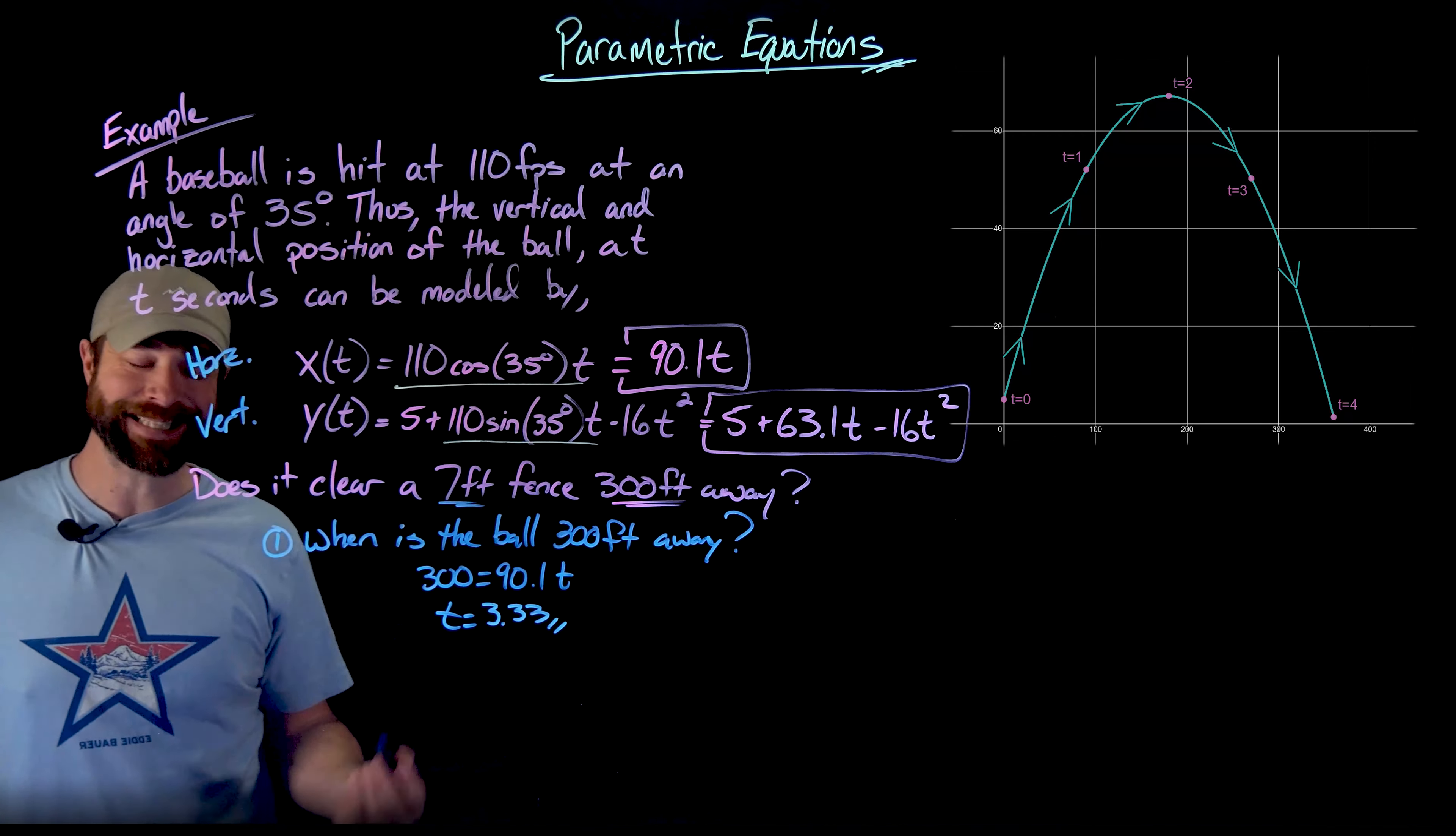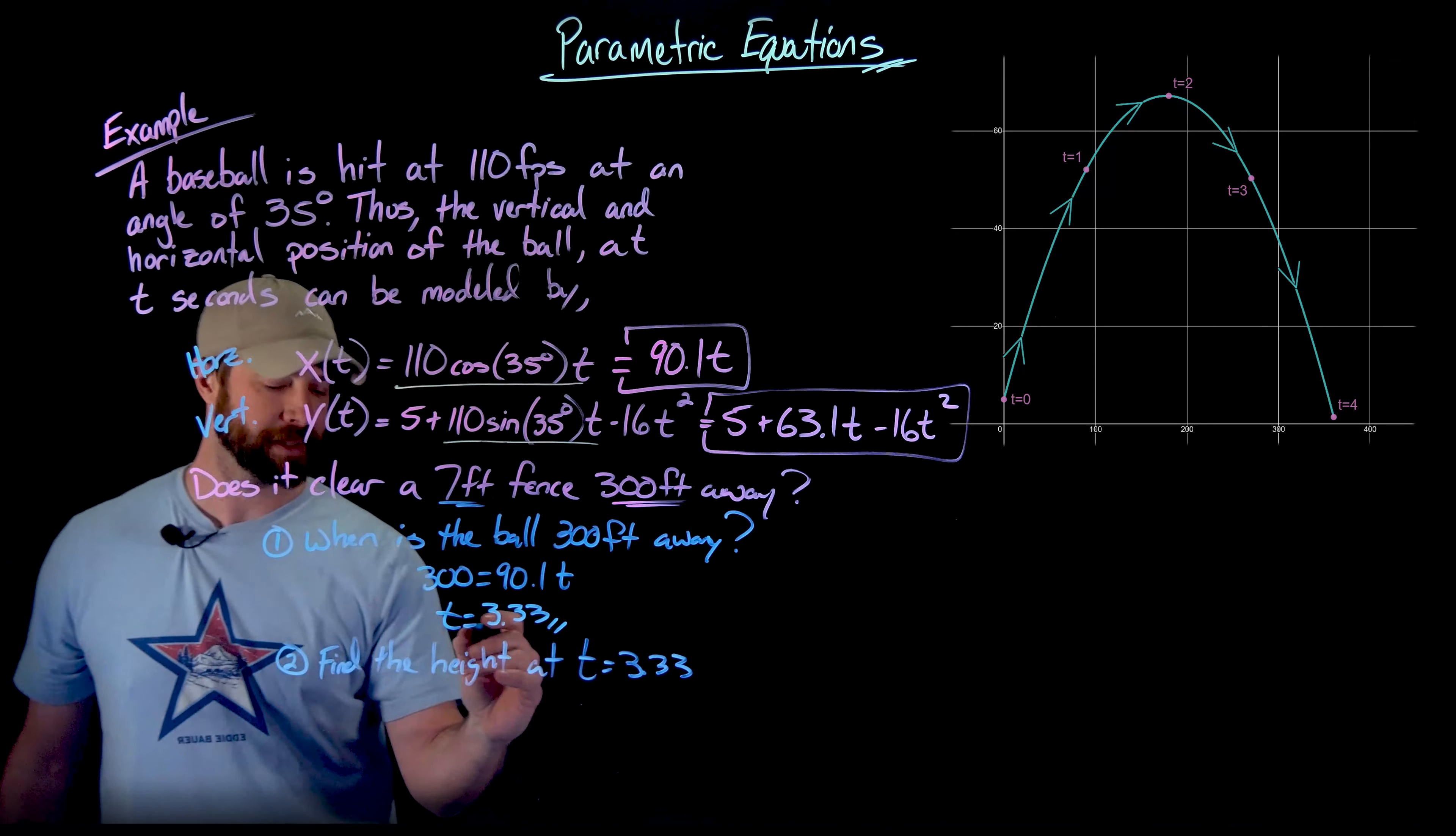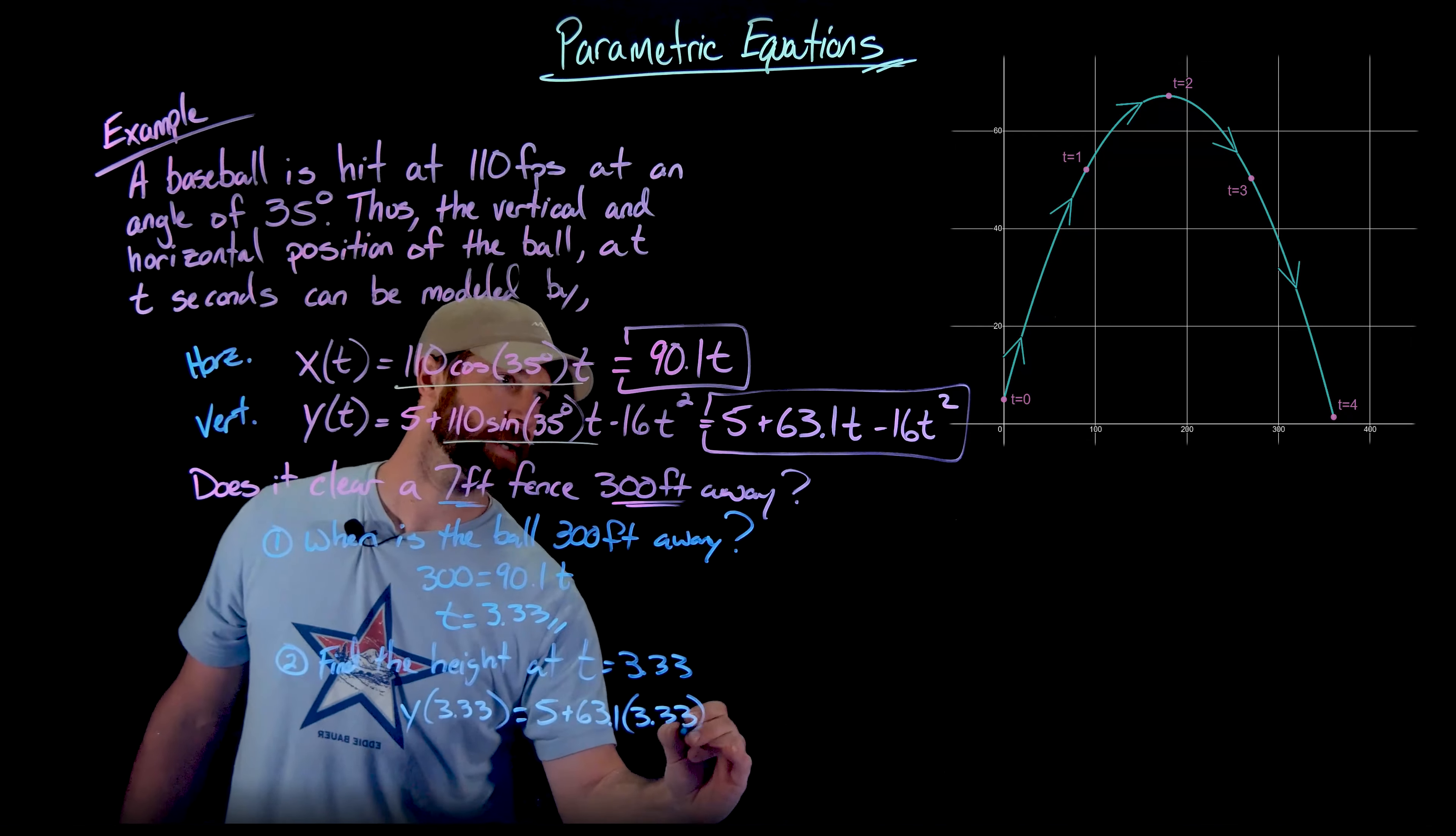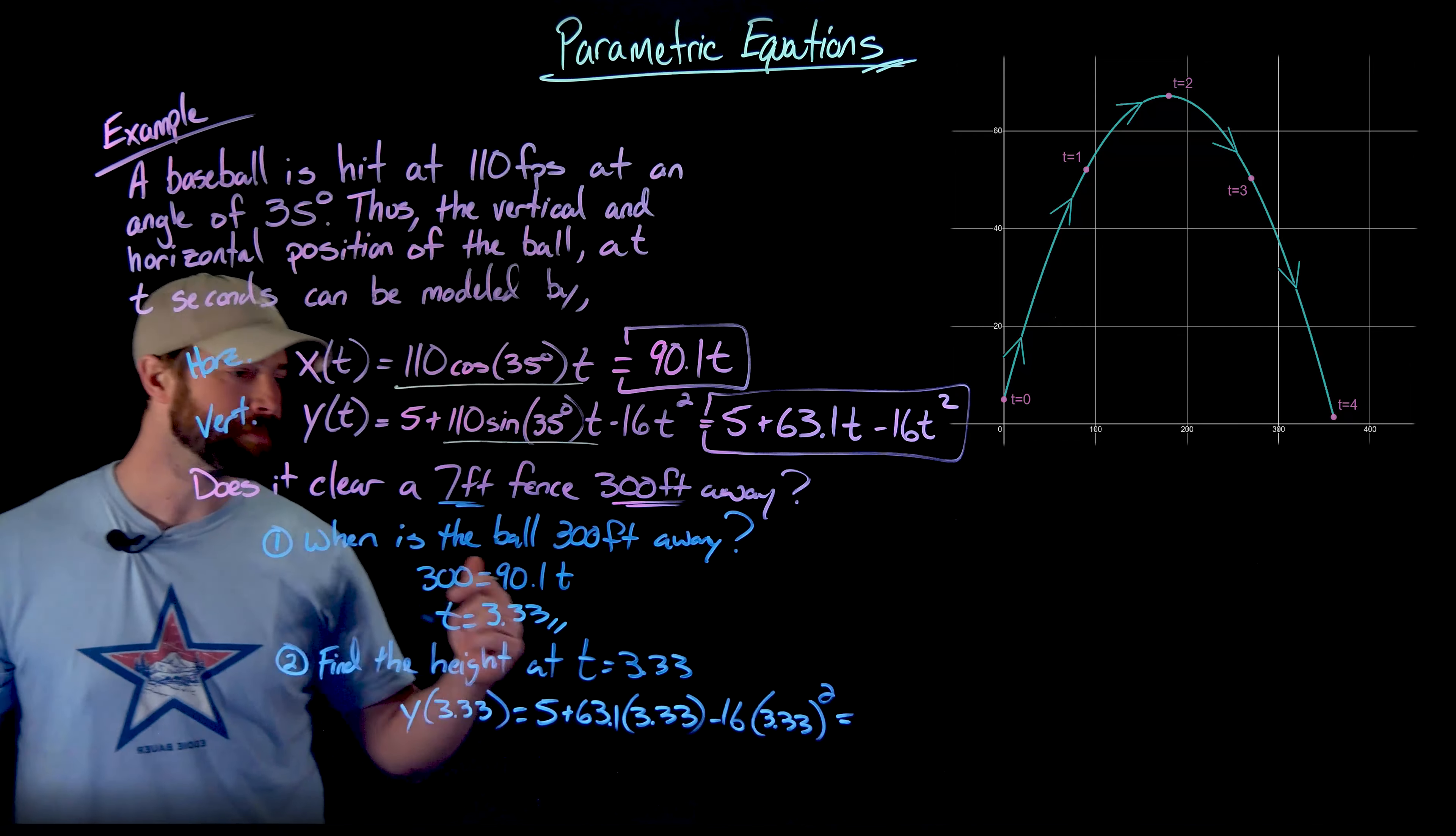So I know the time at which the ball is 300 feet away. And now I need to say, hey, is it at least seven feet? So what I'm going to do right now, I'm going to find the height at t equals 3.33 seconds. And I do that simply by plugging it into this function right here. So y of 3.33 equals 5 plus 63.1 times 3.33 minus 16 times 3.33 squared. And then when I plug that into my calculator, I get that after 3.33 seconds, the height of the ball is 37.7 feet.